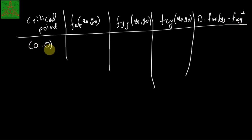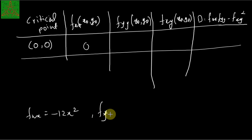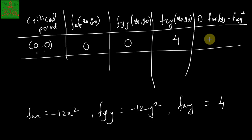At the point (0, 0): fxx equals minus 12x squared, which is 0; fyy is also 0; fxy is the constant 4. Therefore D equals 0 times 0 minus 4 squared, which is minus 16.